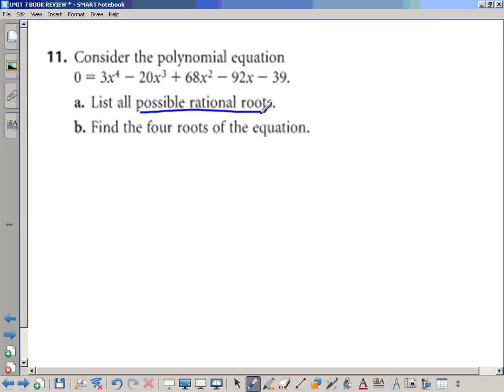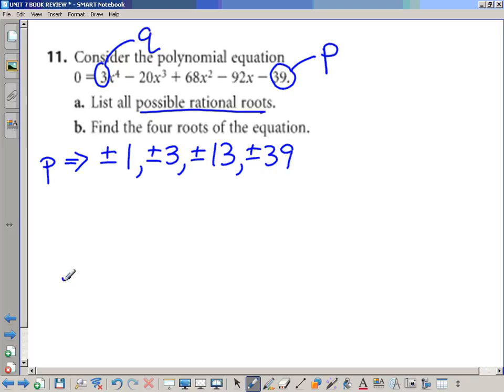So what we do first is we identify who helps us with P and who helps us with Q. The constant on the end tells us P and the coefficient in the front tells us Q. So what you need to do is make a listing of all the potential factors of P. The factors of 39 are positive or negative 1, positive or negative... give me a number that goes into 39. 39 is kind of a weird number. I think it's just 3 and 13 and 1 in itself. Alright. So those are the potential candidates for P.